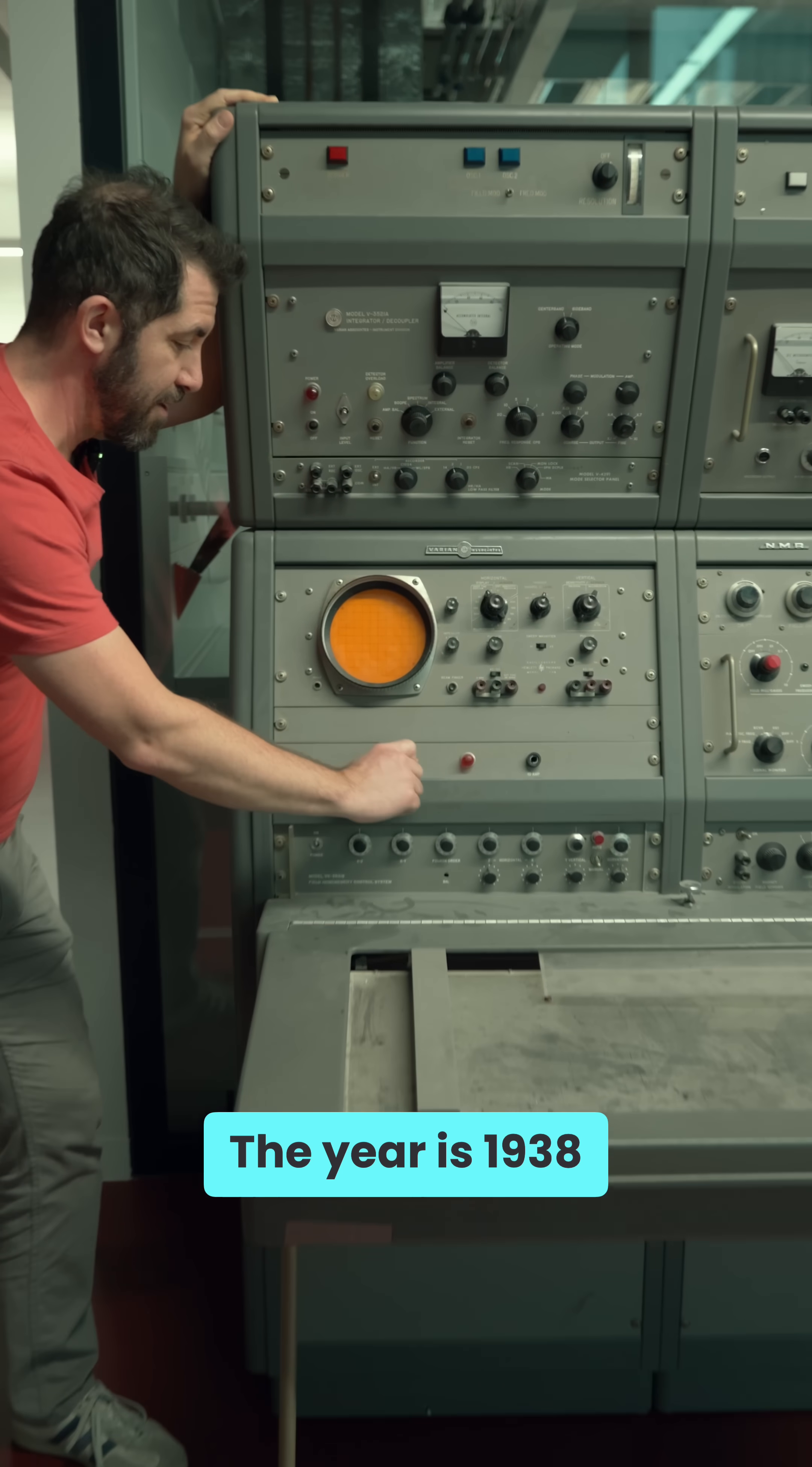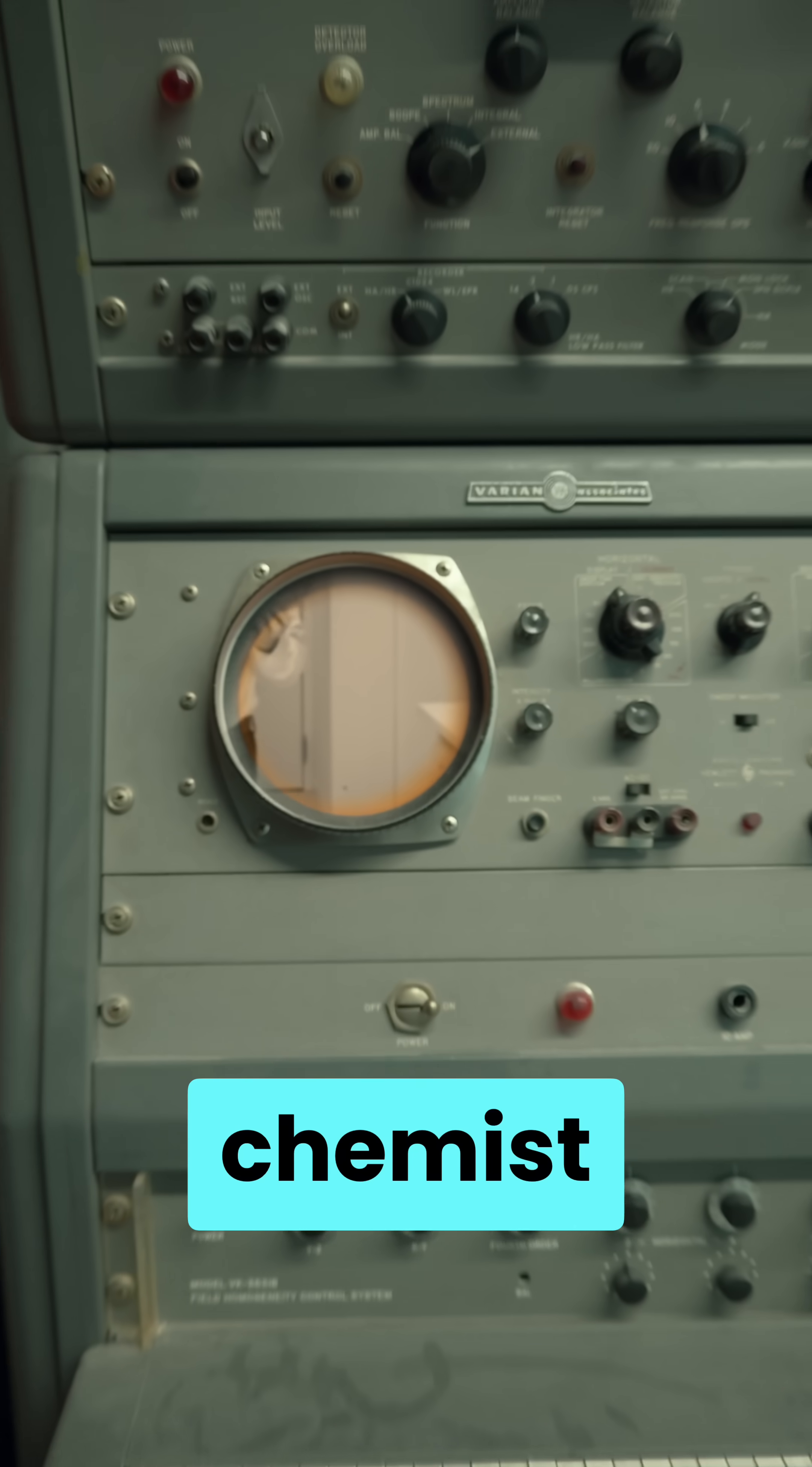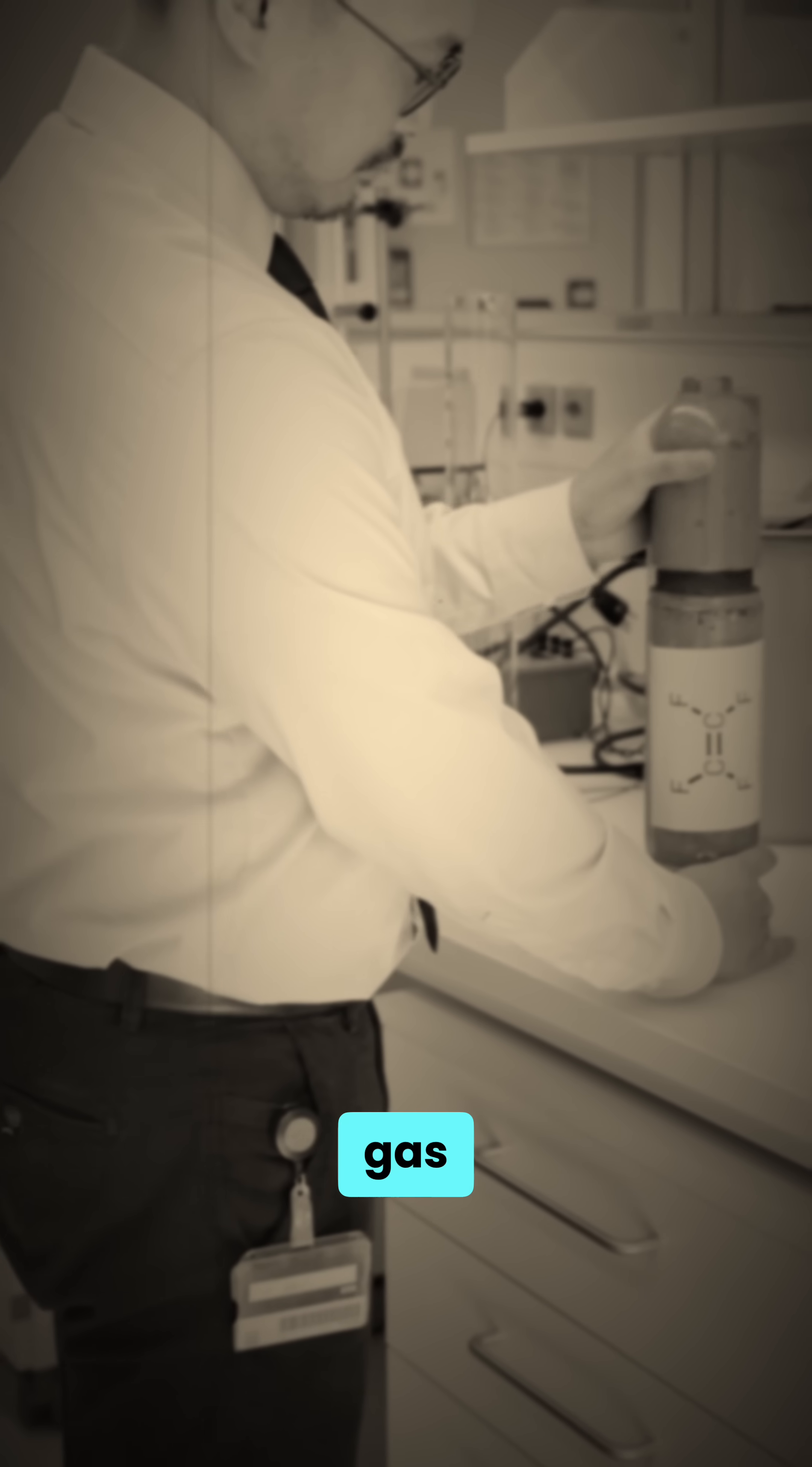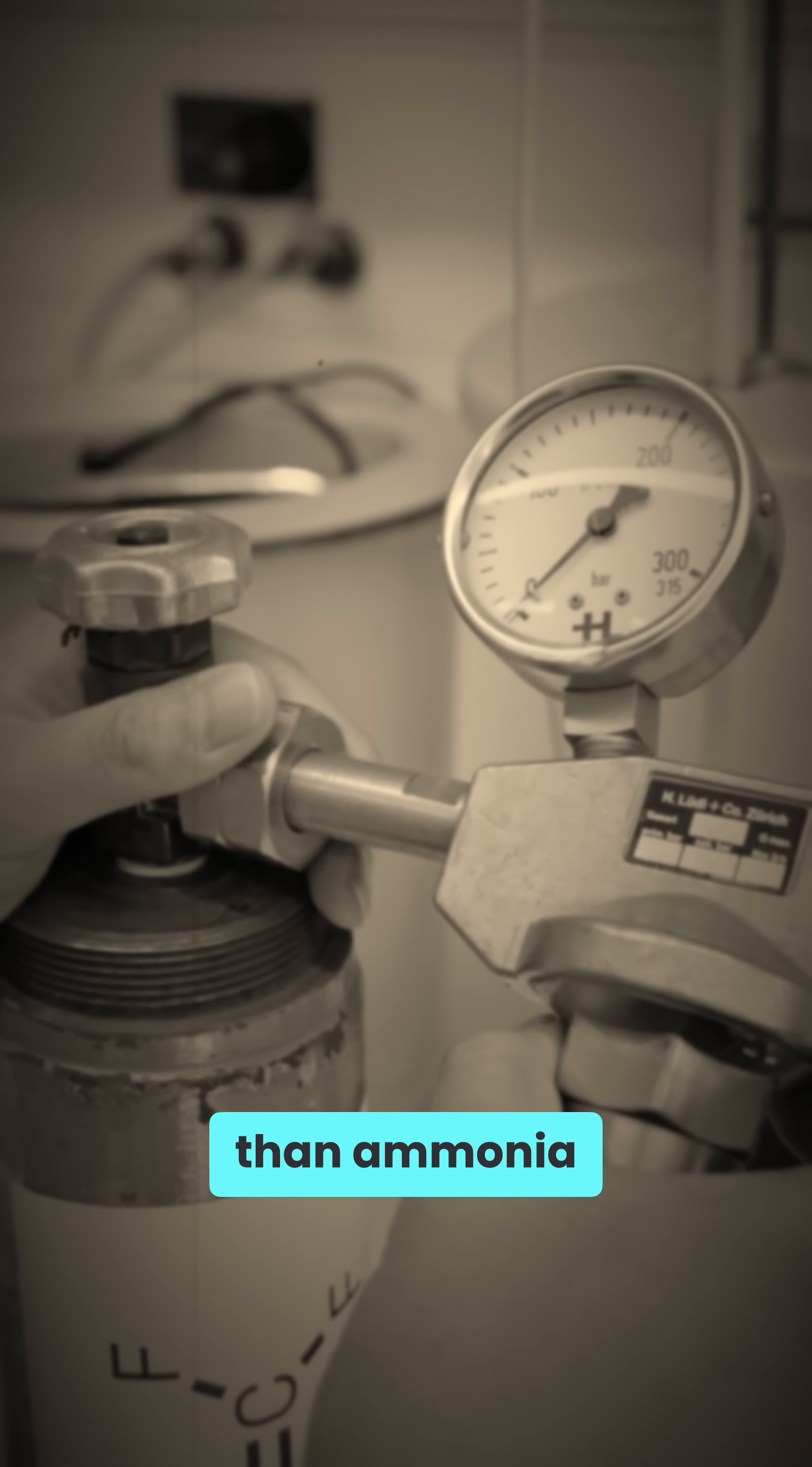The year is 1938. Roy Plunkett, a young chemist at DuPont, is tasked with developing a new refrigerant gas, something safer than ammonia.